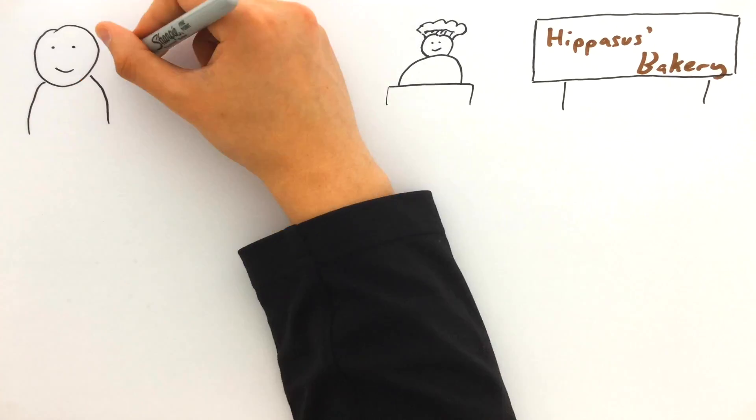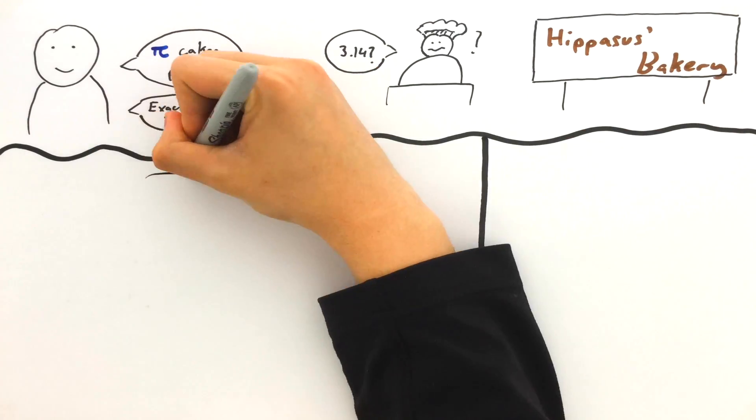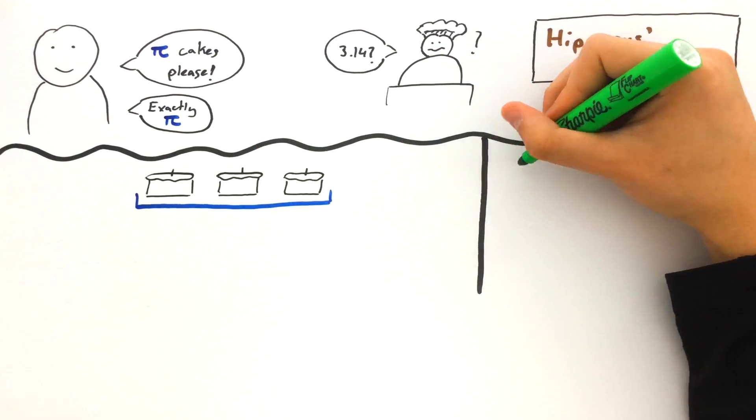Say I walk into a bakery and I ask the baker for pi cakes. Not approximately pi, exactly pi. The confused baker could take out three cakes and give me all of them, but that would be too few.